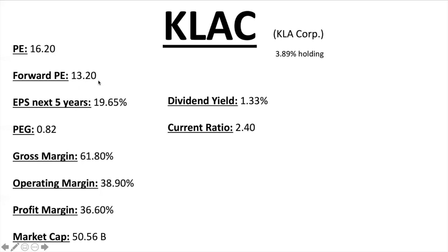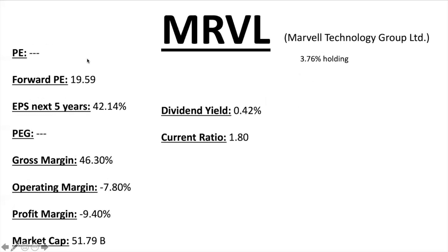KLA Corporation has a 3.89% holding in the ETF. PE ratio 16.2, Forward PE 13.2, EPS next five years 19.65% — bringing its PEG ratio to 0.82, so under one — fantastic. Margins are phenomenal: gross margin over 50%, operating margin 38.9%, profit margin 36.6% — over a third of everything they bring in is straight profit. Market cap just under $51 billion, small dividend, current ratio 2.40.